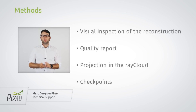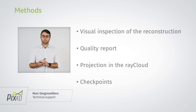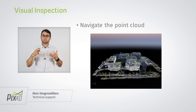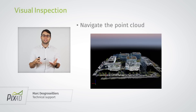We will go over four different methods to make sure that your reconstruction is good. The first one is visual inspection. That just means you generate the first step of your project and then you navigate the point cloud a little bit.